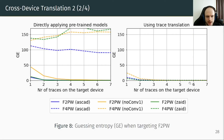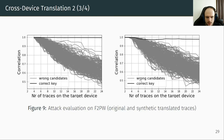This graph shows the guessing entropy when targeting F2 power. On the left, when directly applying the pretrained model; on the right, when using trace translation. Dotted lines represent training on F4 power; solid lines represent training on F2 power. We observe that the performance of ASCAD, NOCONV, and ZAID with channel F4 power can be improved by using trace translation, and the best performance is obtained using trace translation with ZAID. The CPA performance is decreased on synthetic translated traces because CPA is a univariate attack that only considers one SNR peak at a time.